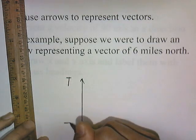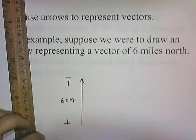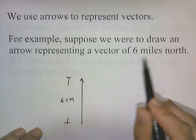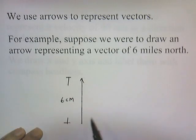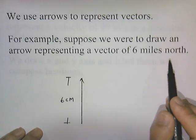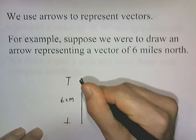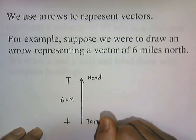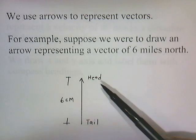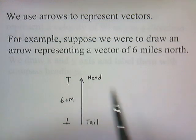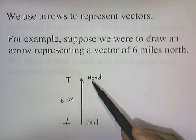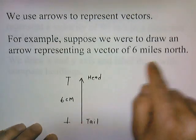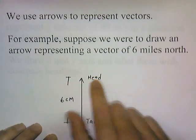This vector is six centimeters long. The length of the vector — six centimeters — represents the magnitude of the vector, six miles. So six centimeters represents six miles. It's pointing up, so the upward pointing direction represents north. The tip of the arrow is the head and the other end is the tail. The arrow points up to indicate the vector is pointing north, and we make the arrow six centimeters long to represent a scalar quantity of six miles. The length represents the magnitude and the way the arrow is pointing represents the direction.